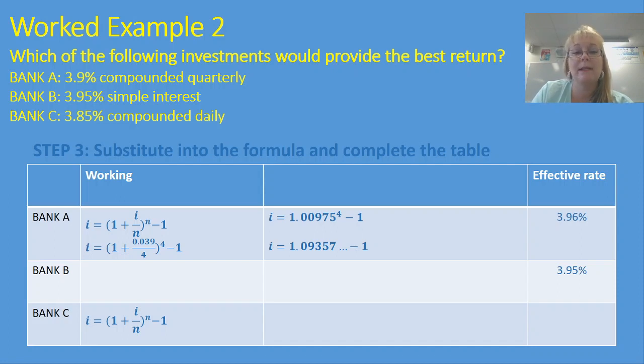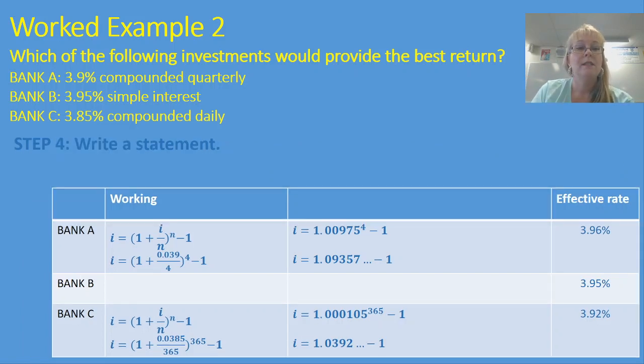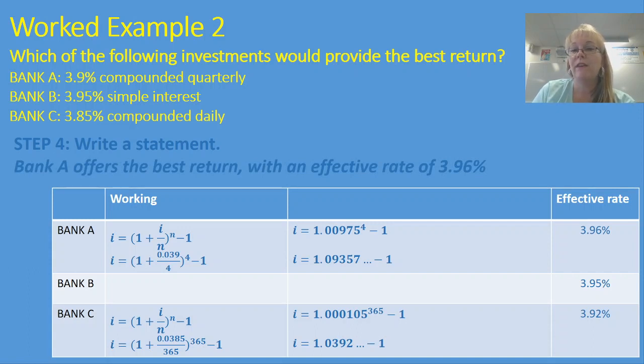Now I'm going to do the same thing for Bank C. I'm going to substitute the information into the formula and do all of the steps of working that I need to do to show my teacher how I've gone about producing my answer. And then my final answer is 3.92%. So we can see just looking at this table that the best bank for me to go with will be Bank A. It produced what I expected, a higher effective rate than the other two options. So my last step is to write that as a statement: Bank A offers the best return with an effective rate of 3.96%.